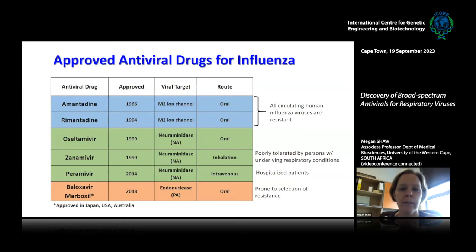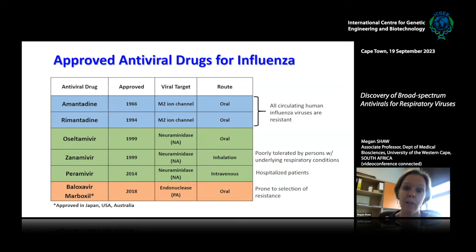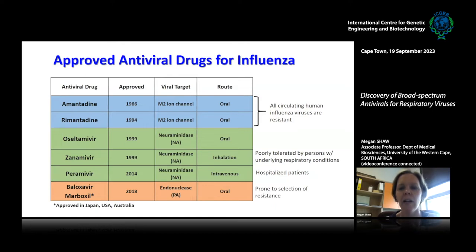Moving on to influenza — with many more years of research, we have a larger panel of drugs, though not without their own problems. In blue are the adamantanes, the first drugs approved for treating influenza, which target the M2 ion channel protein. However, they are completely useless at the moment because all circulating influenza viruses are resistant to these drugs, so effectively they're no longer on the shelf.